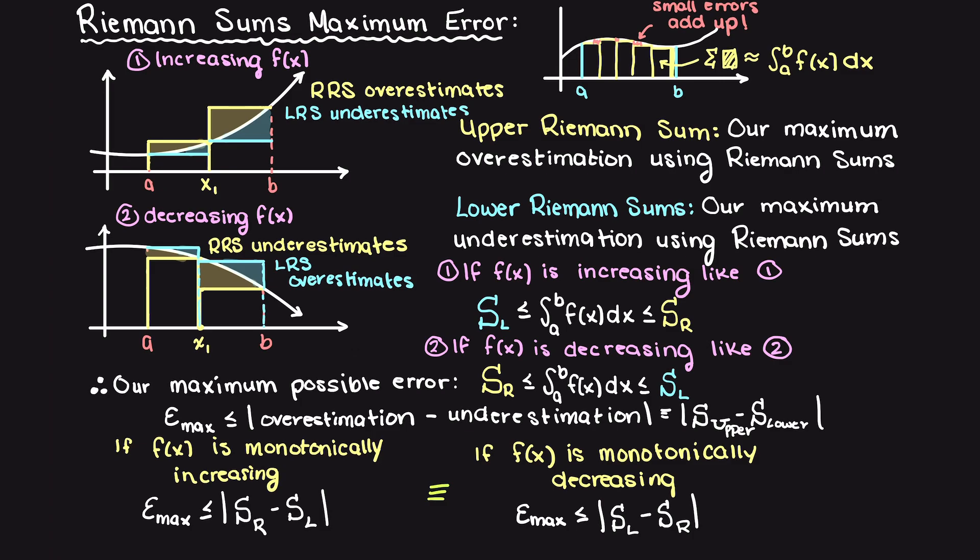Therefore we could write it like so, however with the absolute bars it doesn't really matter. Now let's develop an equation to check our answer using this method. Let's assume a monotonically increasing function with equal spacing for now. Let's plug in our right Riemann sum and our left Riemann sum equations for equally spaced step sizes, that we found in the last video.